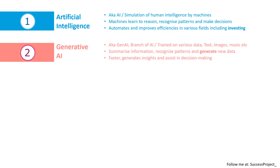Now coming to the second main idea, that is generative AI. There are many branches or divisions in artificial intelligence. Generative AI is one such division, also called as Gen AI. It is trained on various data like text, images, music, video, etc. Based on that it is able to recognize patterns and generate new data. The word 'generate' is the key — it can generate content which never existed before. It is faster and able to generate insights, thus assisting in the decision-making process.